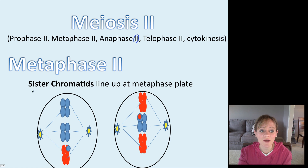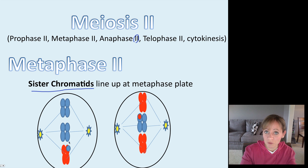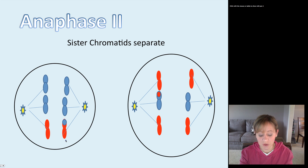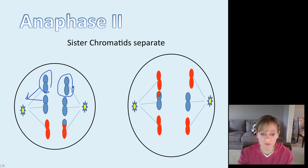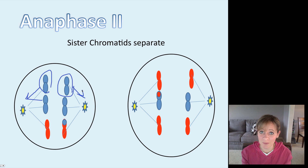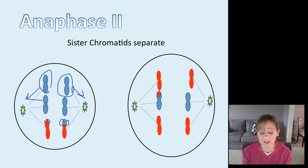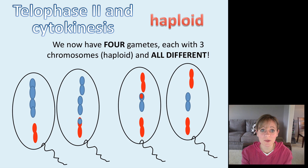During metaphase II, we've got the sister chromatids lining up at the metaphase plate, whereas before in metaphase I we had the homologous chromosomes lining up. During anaphase II, it is the sister chromatids that are separating from each other. This is important because during anaphase I it was the homologous pairs that were separating. Now we're actually separating those sister chromatids, which — unless crossing over has occurred — would be identical. But because crossing over has occurred, they're actually not identical, and remember that creates variation.